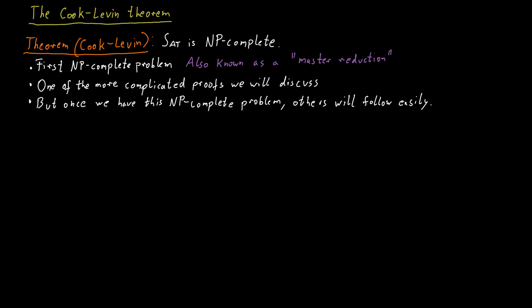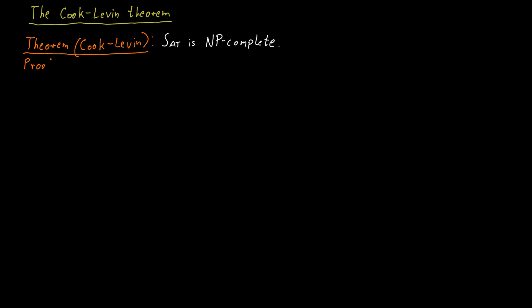So how could we prove such a powerful theorem? Well, we know that the first step for establishing NP-completeness should really be to show that satisfiability is contained in NP, but we already know that, we've already discussed that. So let's move straight to the second point. We have to take any problem in NP and polynomial time Karp reduce it to satisfiability.